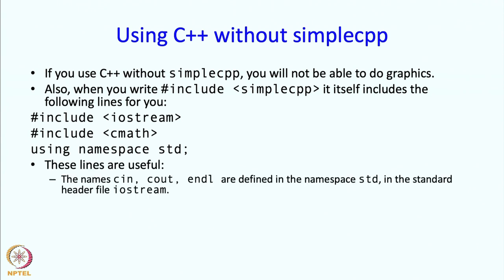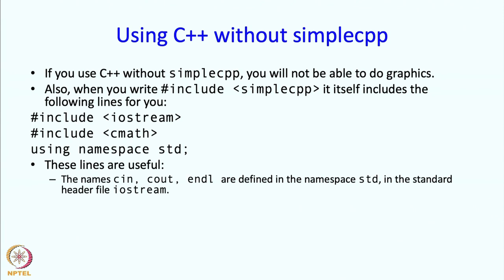These lines are useful. The names cin, cout, and endl — all related to input/output — are defined in the namespace std, and this definition happens in the standard header file iostream. So you need to include iostream to get these names, and if you want to use them directly without writing 'std::cin', you also need the line 'using namespace std'.